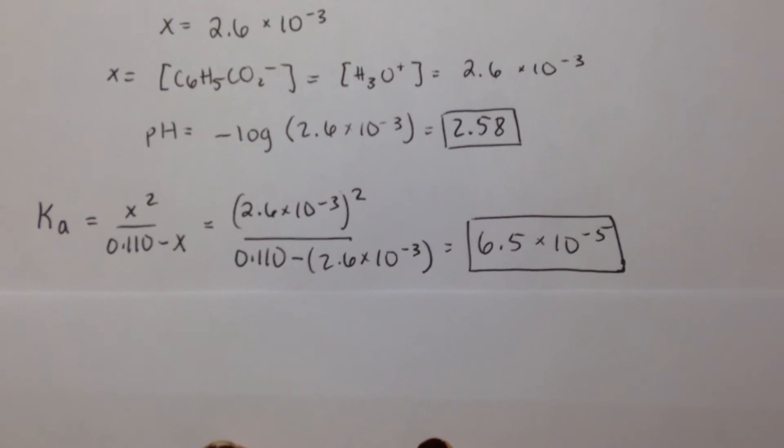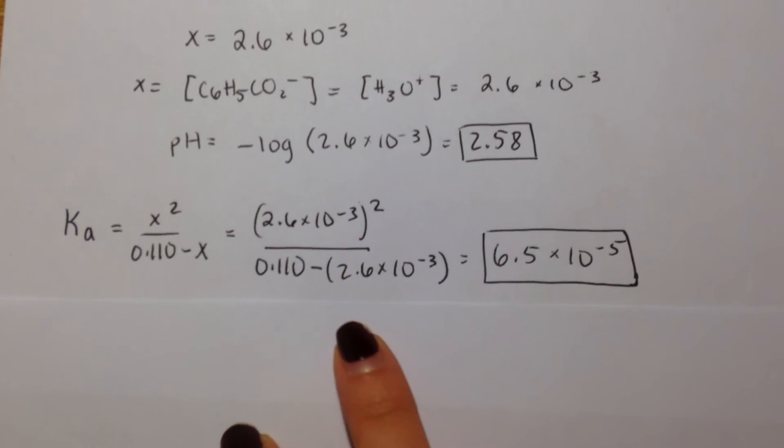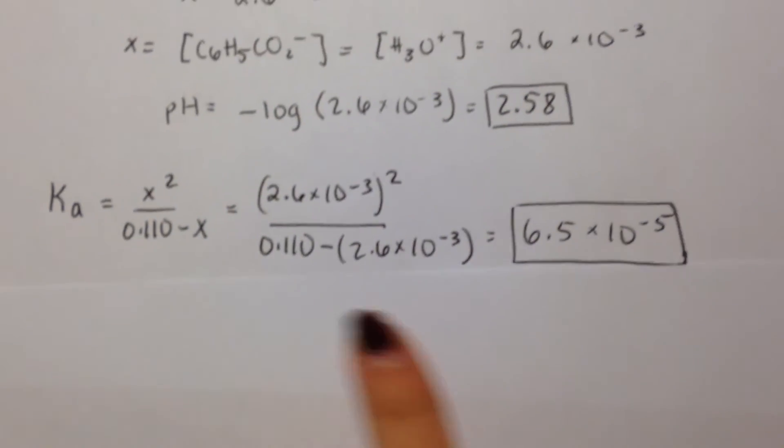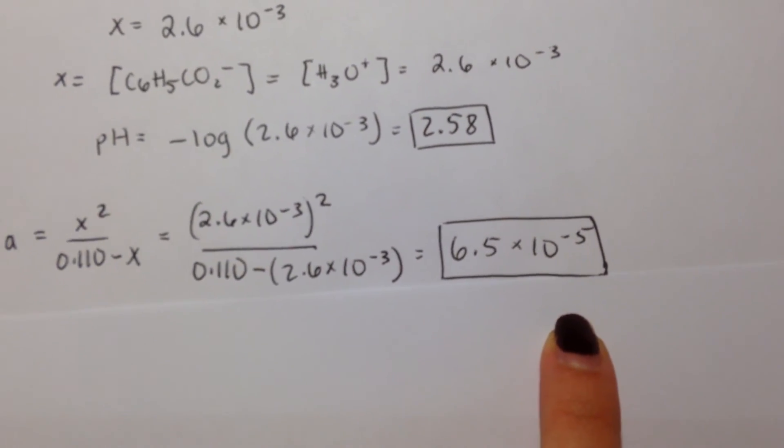And then the Ka is just this equation that we had before, and then now that we know x, we just fill in x into the Ka equation and solve it out to find 6.5 times 10 to the negative fifth.